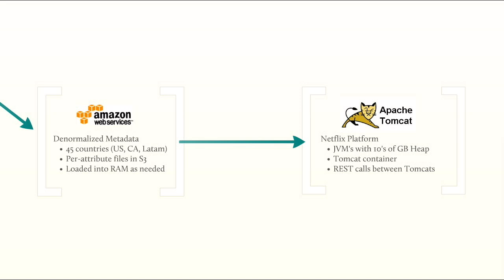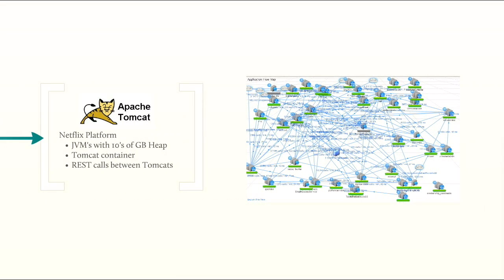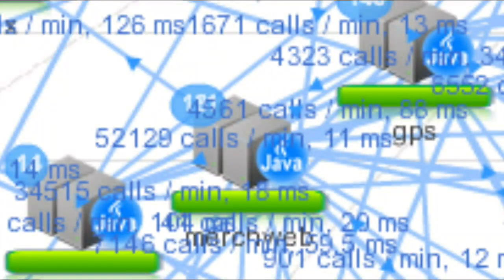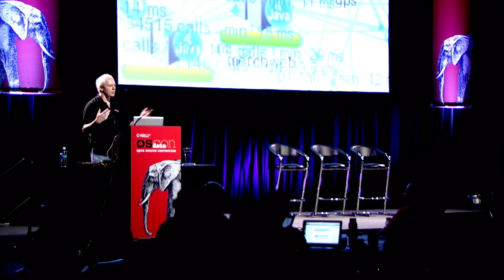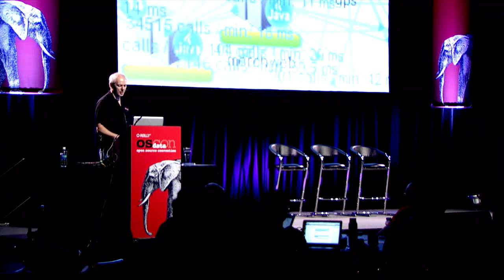We typically run everything on Apache Tomcat with tens of gigabytes of heap, and everything runs in this Tomcat container. We do lots of REST calls between services, which produces a fairly complicated architecture. There are about 150 services that we've built and several thousand machines running as a single application, with everything calling everything else. This is actually a screenshot from AppDynamics, which is the only way we can even track what is calling everything.